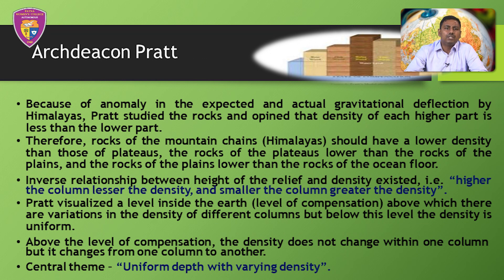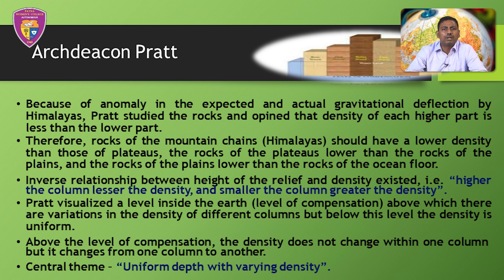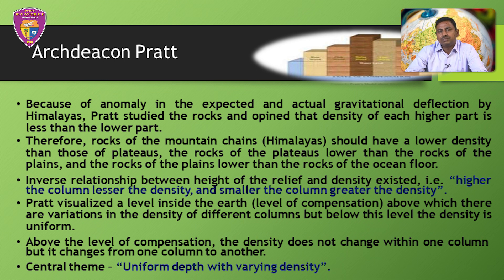Now let's see the concept given by Archdeacon Pratt. He gave his concept in 1859. Because of the anomaly in the expected and actual gravitational deflection by the Himalayas, Pratt studied the rocks and was of the view that the density of each higher part is less than the lower part. Therefore, he said that the rocks of the Himalayan mountain chains should have a lower density than those of plateaus. The rocks of the plateaus will have lower density than the rocks of the plains, and the rocks of the plains will have lower density than that of the ocean floor. An inverse relationship between height of relief and density exists — that is, higher the column, lesser the density, and smaller the column, greater the density. Pratt visualized a level inside the earth above which there is variation in the density of different columns, but below this level the density is uniform.